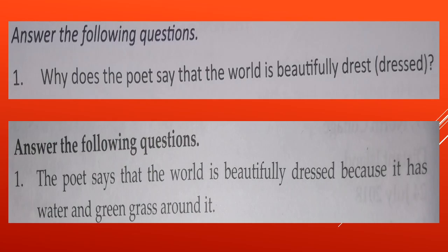So the answer will be here. The poet says that the world is beautifully dressed because it has water and green grass around it. You can see both. It is under in a dress where it has water and green grass. It looks like a dress.